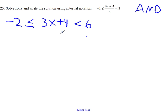So let's subtract 4 from all sides. Negative 4, negative 4, negative 4. This gives us negative 6 less than or equal to 3x less than 2. Now divide both sides by 3.